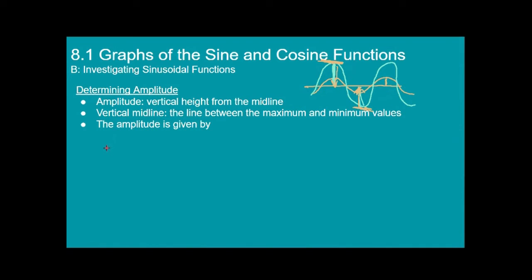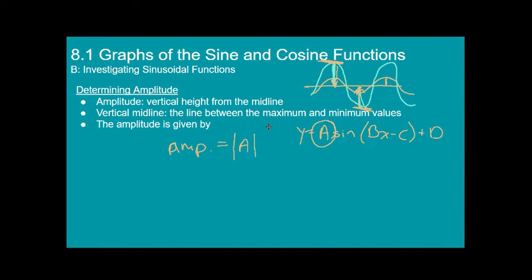The amplitude is given by the absolute value of A in our generic function y = A·sin(Bx - C) + D. So whatever the absolute value of A is, that's the amplitude — it tells you how far above and below the midline the function reaches. A negative A just means it's a reflection, which doesn't affect the amplitude, and that's why we take the absolute value.